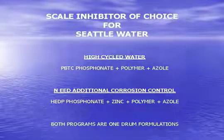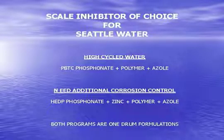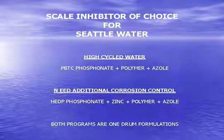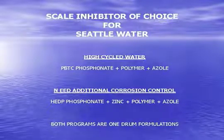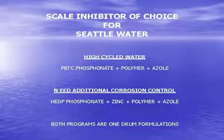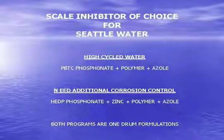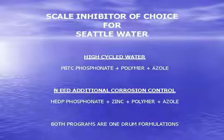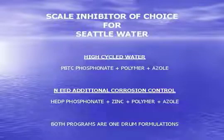Scale inhibitors of choice in Seattle — let's figure out what you should be using. There are basically only two choices that are technically sound for Seattle water. If you're going to push your high cycles — which are 15 cycles of concentration — I recommend the use of PBTC phosphonate. This is a phosphonate designed to handle high-scaling water because we're actually driving the water to a scale-forming state. A PBTC phosphonate blend — most water treatment companies have a polymer they use for suspended solids and azole. Azole is your copper corrosion inhibitor, and we'll talk about that.